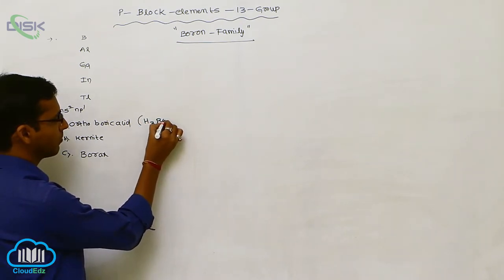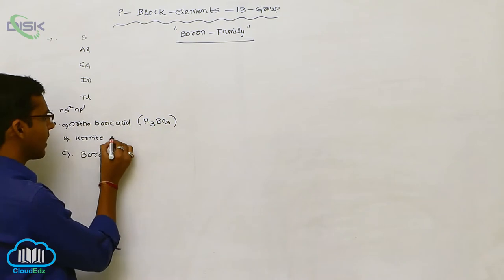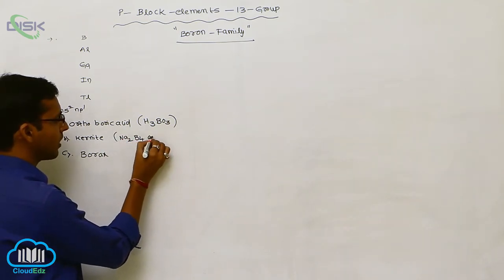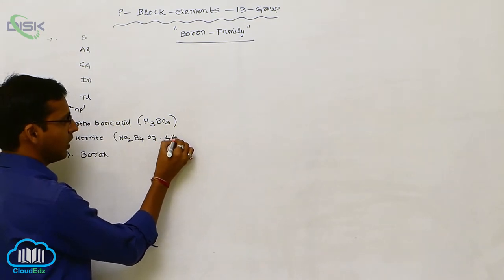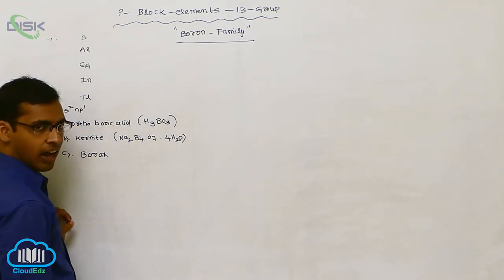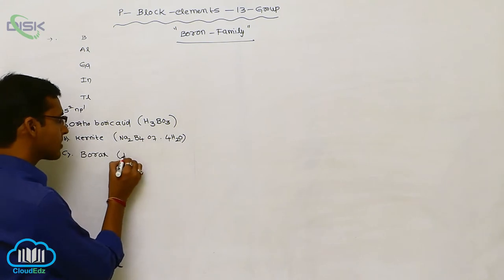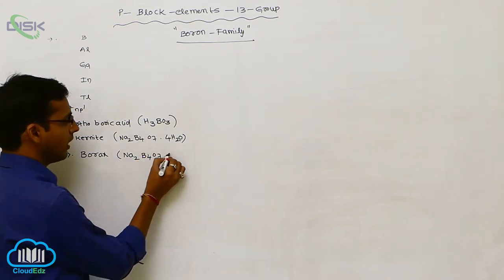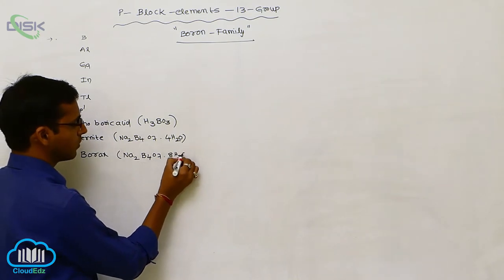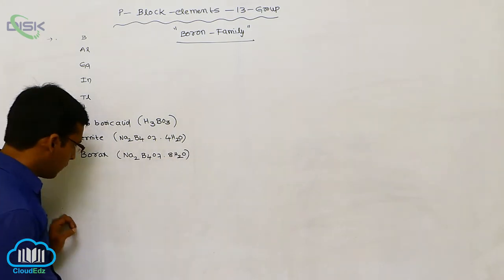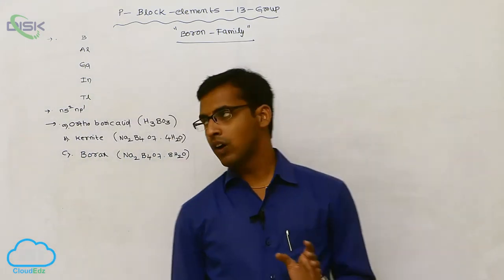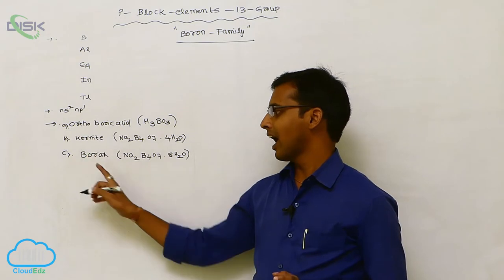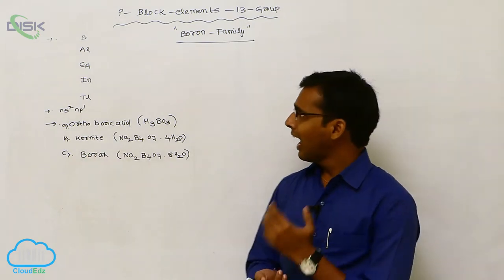Kernite and borax. So this orthoboric acid formula is H3BO3. This kernite formula is Na2B4O7 containing 4H2O tetrahydrate. Borax formula is Na2B4O7 8H2O. So these are the available form of boron as orthoboric acid, kernite and borax.